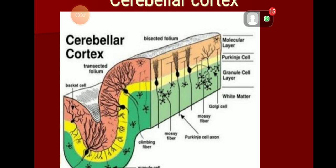The next layer is the Purkinje cell layer, where you see a single row of large flask-shaped Purkinje cells. Still inner to that is the granule cell layer, which contains two types of cells: granule cells and Golgi cells. This completes the structure of the cerebellar cortex.